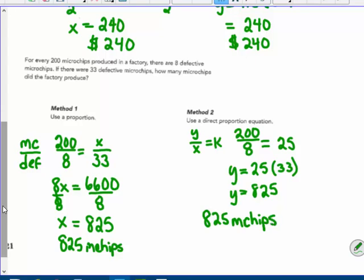Well similar ways. One is doing it in one step. The method two using the direct proportion equation. And the other one using a proportion does it in two steps. You have to multiply and then divide.